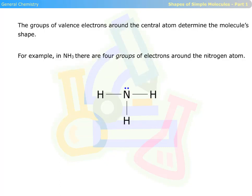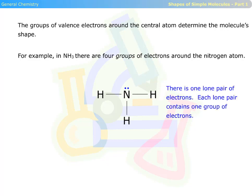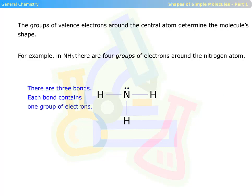The groups of valence electrons around the central atom determine the molecule's shape. For example, in ammonia, there are four groups of electrons around the nitrogen atom. There is one lone pair of electrons — each lone pair contains one group of electrons. There are three bonds, and each bond contains one group of electrons.